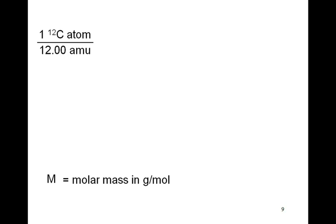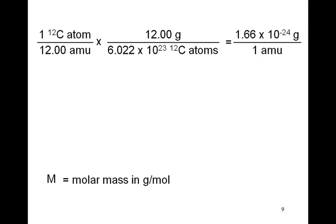So, one carbon-12 atom has a mass of 12 AMUs. We are going to take that and we are going to multiply it times the fact that 12 grams of carbon-12 has a quantity of 6.022 times 10 to the 23rd carbon-12 atoms. And then, we are going to multiply it times the fact that 1.66 times 10 to the negative 24th. When you multiply 1 over 12 times the 12 over 6.022, what we have developed here is the mass in grams that is equivalent to 1 AMU. So, 1 AMU is equivalent to 1.66 times 10 to the negative 24th grams.